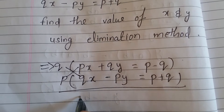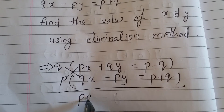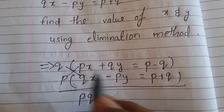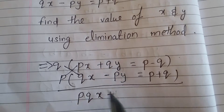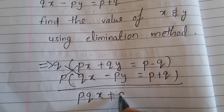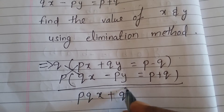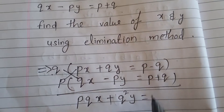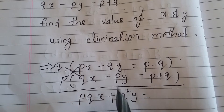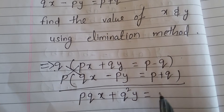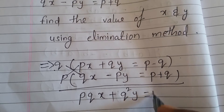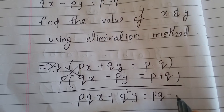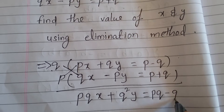After multiplication, equation one becomes: pq·x plus q²·y equals q(p minus q). Equation two becomes: pq·x minus p²·y equals p(p plus q).